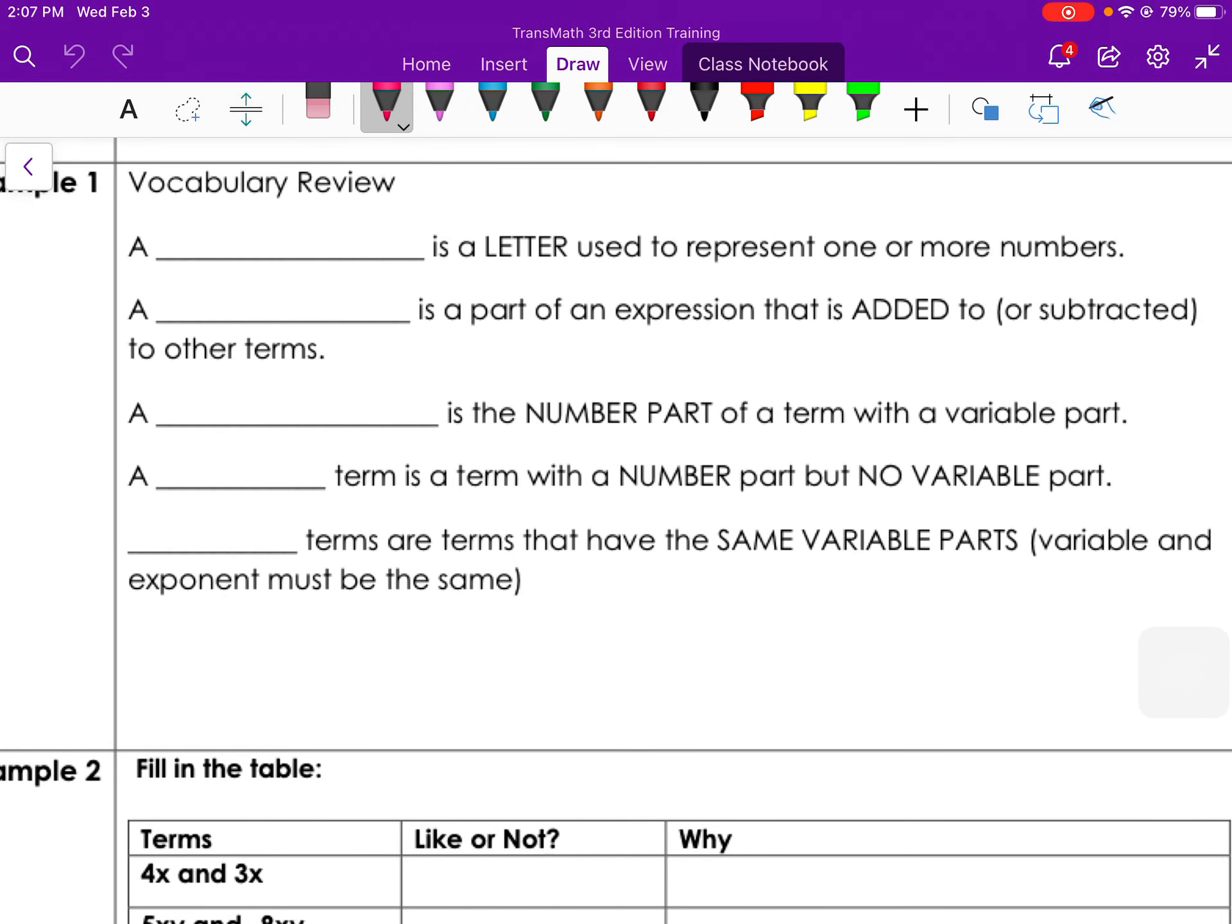So here's a quick vocab review. A blank is a letter used to represent one or more numbers. That would be a variable. A variable is a letter that we use to represent an unknown value. A blank is part of an expression that is added to or subtracted to other terms. That's a term.